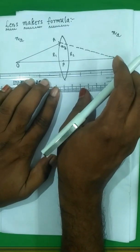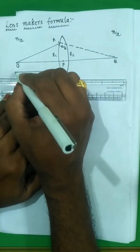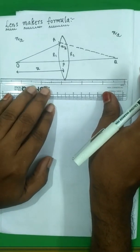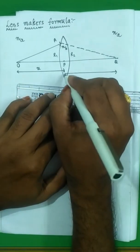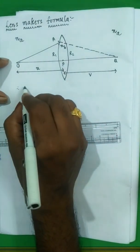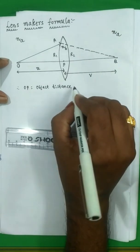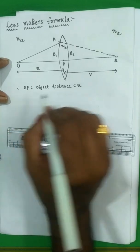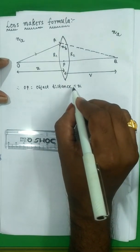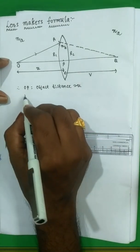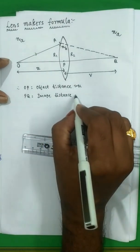The object distance from O to P equals u. Since it is an incident ray we take it as minus u. The image distance PQ equals v.